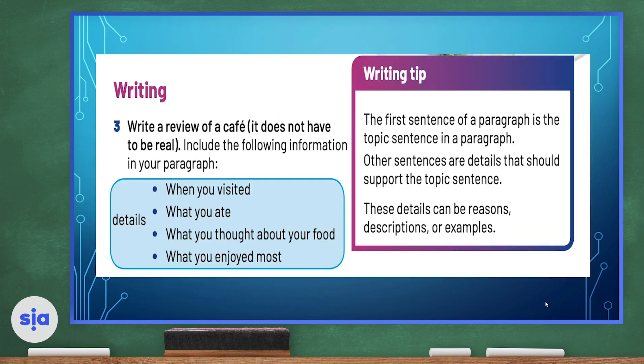Now let's jump to our writing section. Write a review of a café. Think of a place you visited and write about whether you liked it or not and why. You can talk about when you visited, what you ate, what you thought about your food, and what you enjoyed the most. Remember, the first sentence of a paragraph must be the topic sentence — the sentence that tells us the subject of our writing. Other sentences are called details and they should support the topic sentence. If you write about the café in the first sentence, you must give details about the café after the topic sentence. These details can be reasons, descriptions, or examples.